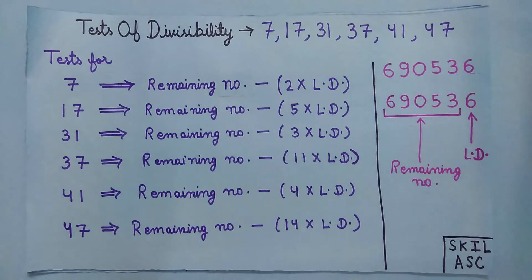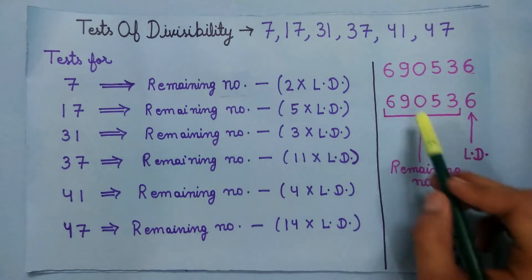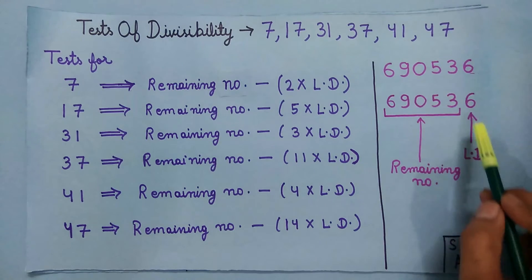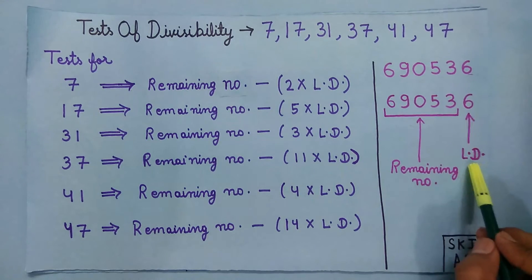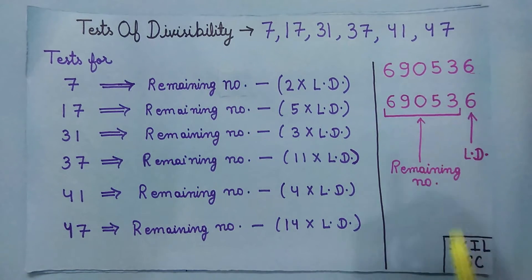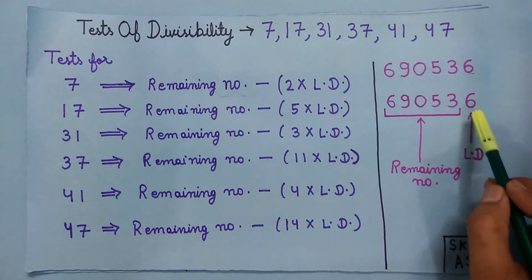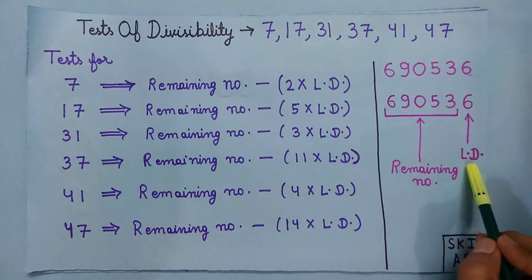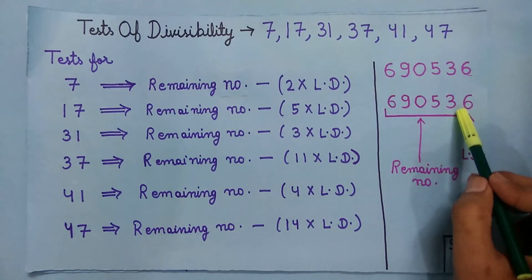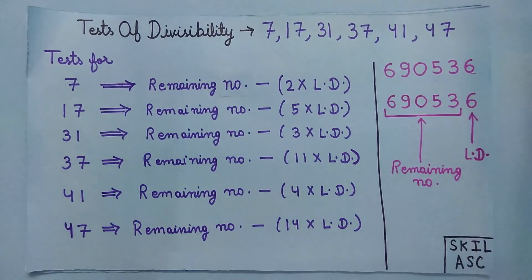First of all, let's take any number. In this number, this is the last digit and this is the remaining number.